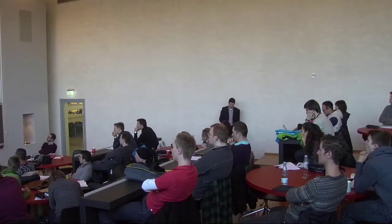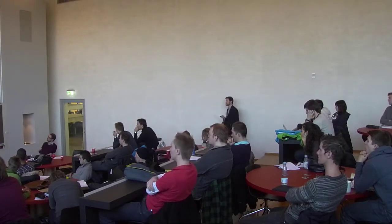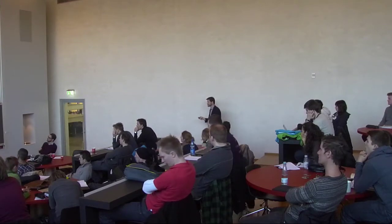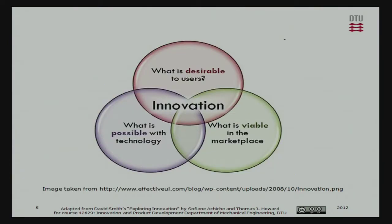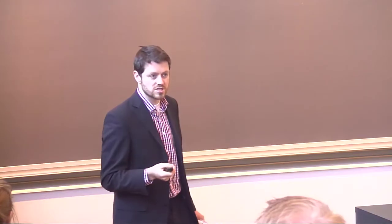Here's another common view: innovation is 'one of those things that makes you wonder how it was done before that thing was on the market' — so it's transformative or disruptive, changing technology, the market, or society completely. Innovation is also defined across three domains: it must be technologically feasible, the market must be viable with adequate margins, and it must be desirable to users. Without those three, you can't have a successful innovation.